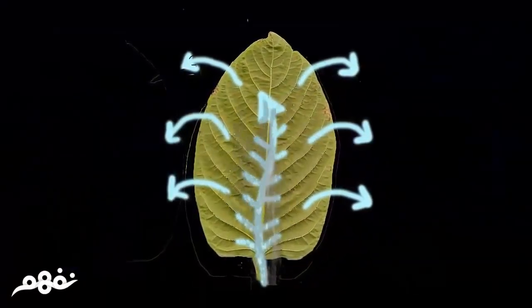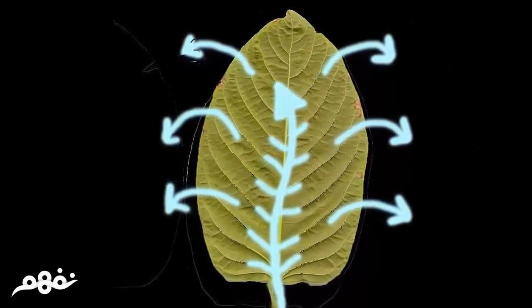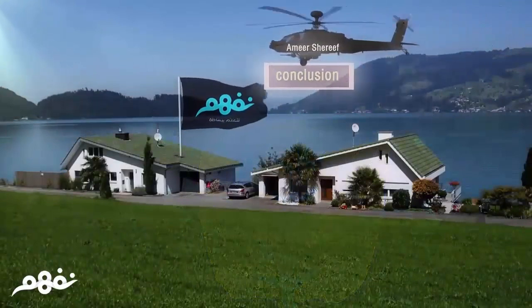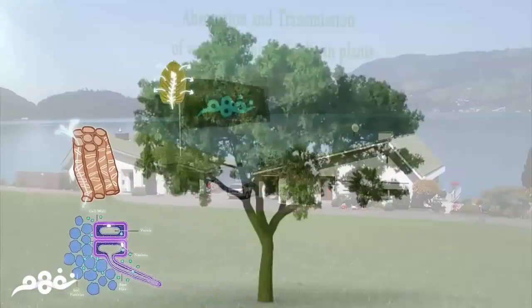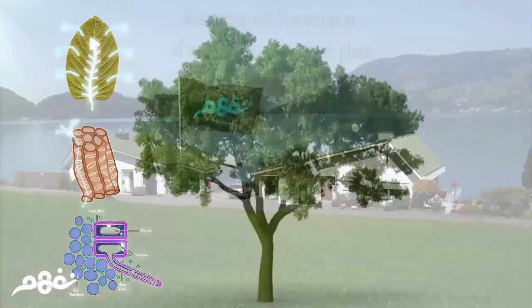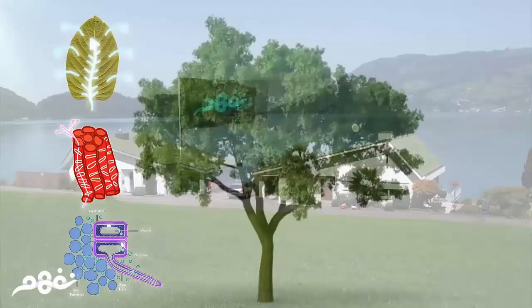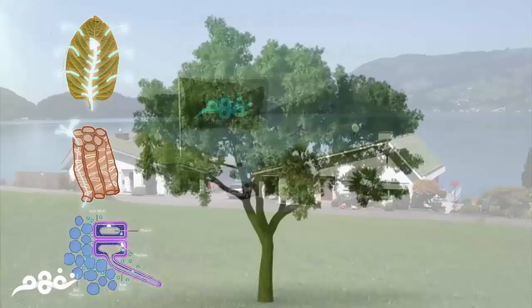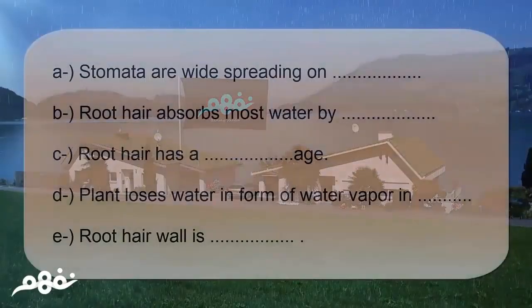The process of transpiration is very important because it creates a pulling force that raises water to the top, due to cohesion and adhesion forces, among other reasons you will learn in future years of study. To summarize, we have learned the path water takes from the ground to other parts at the top of the plant: transport of water and dissolved salts through root hairs, then through xylem vessels in the stem, and finally water evaporation from stomata through the process of transpiration.